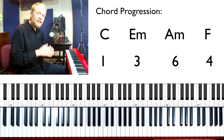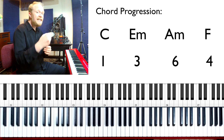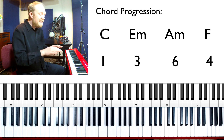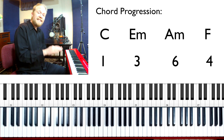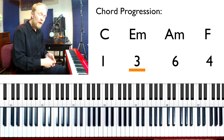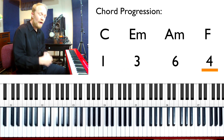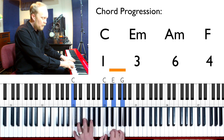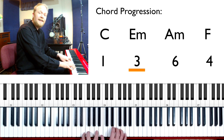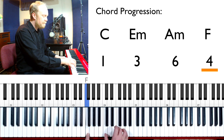Is this making sense? So now, instead of just having C, E minor, A minor, F — what we have is, in the key of C, the one chord, the three chord, the six chord, and the four chord: one, three, six, and four.